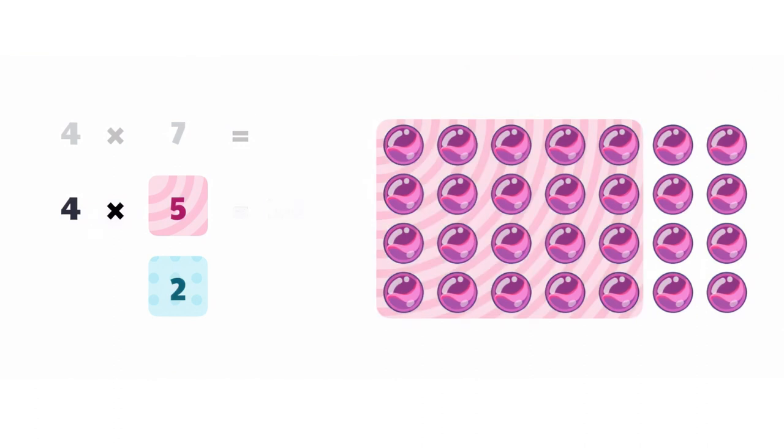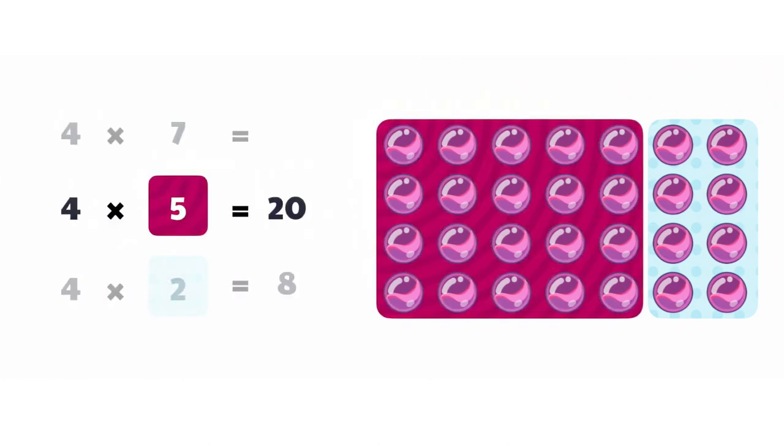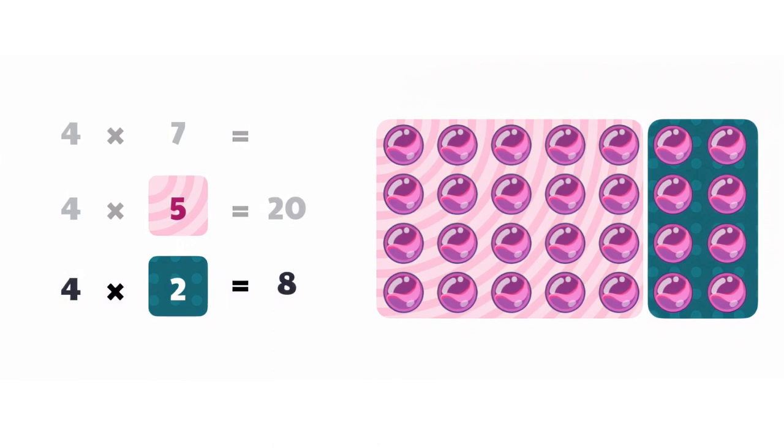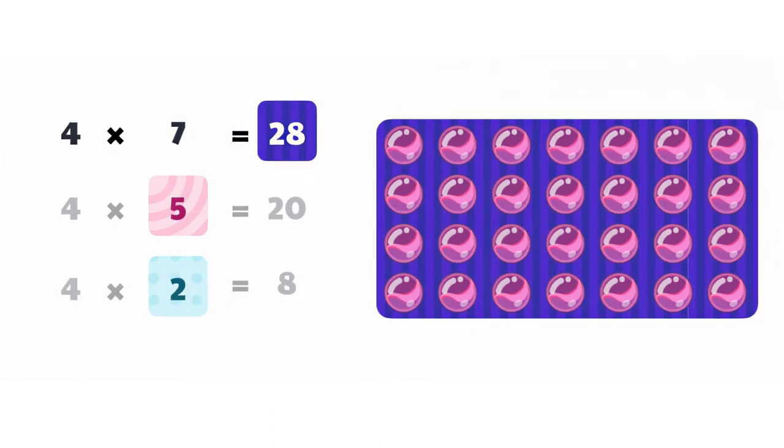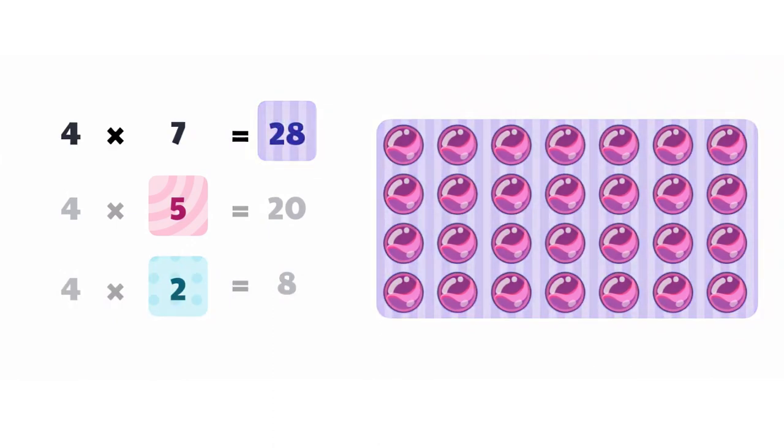And then multiply 4 times 2, which looks like this, and gives me 8. Let's add those products together. 20 plus 8 is 28. 4 times 7 can be broken into 4 times 5, and 4 times 2, which is equal to 28.